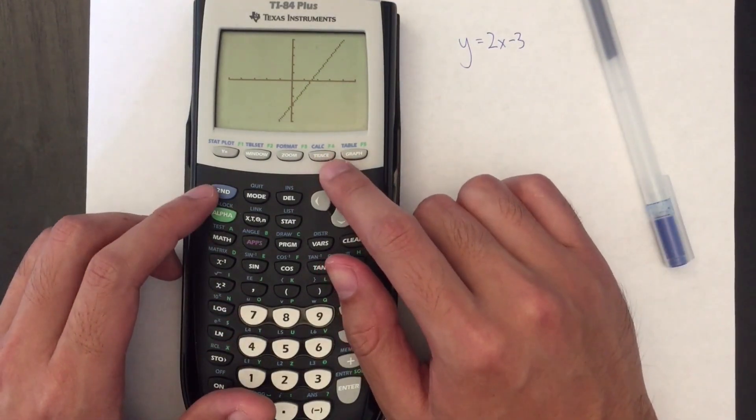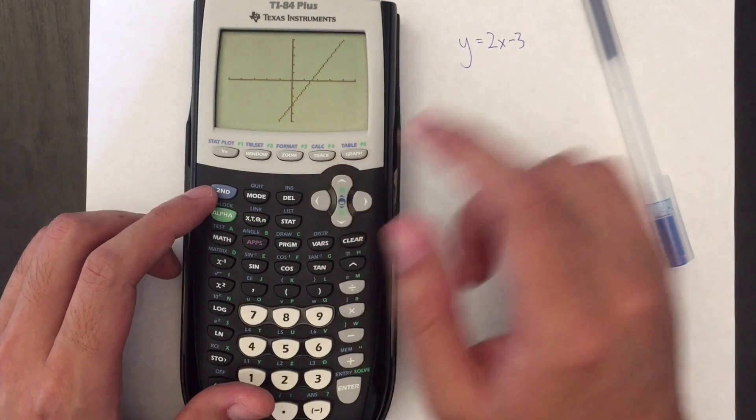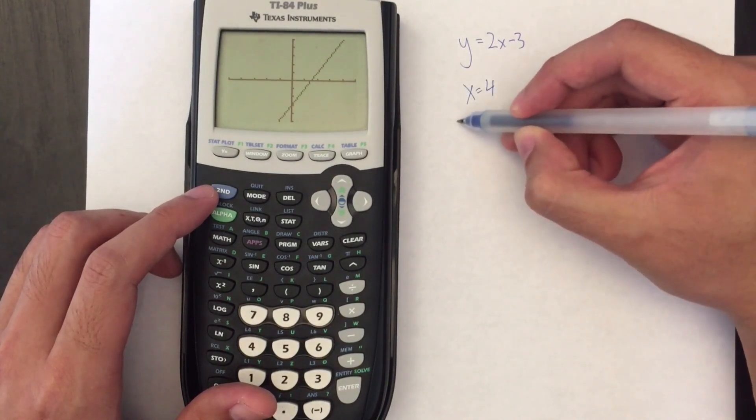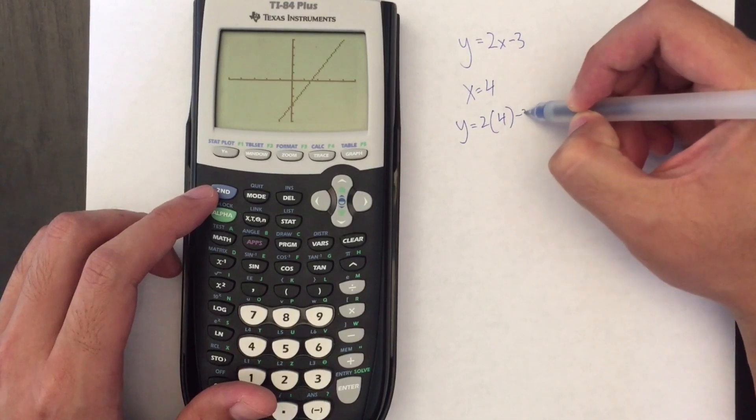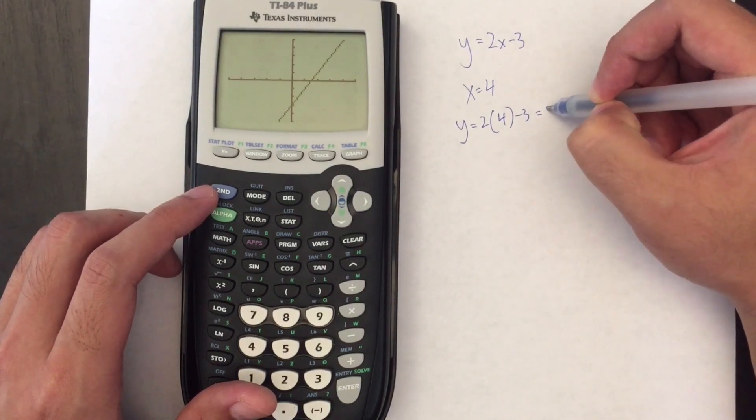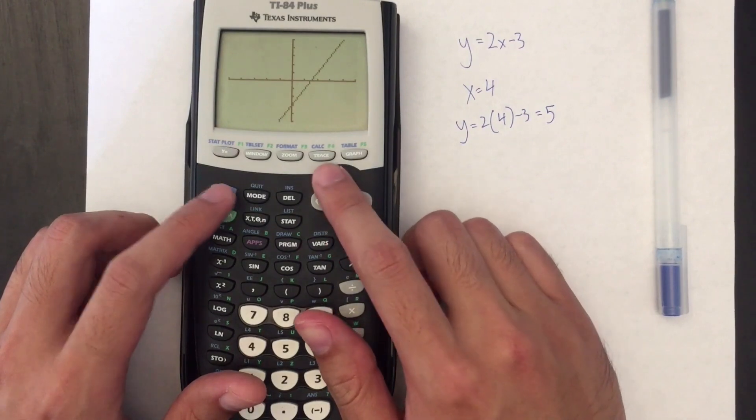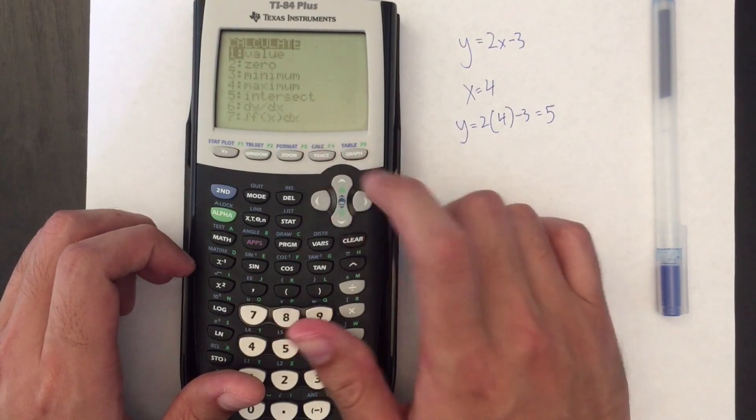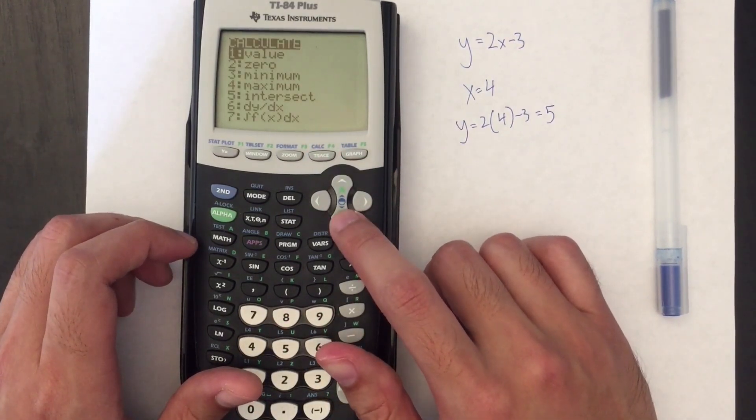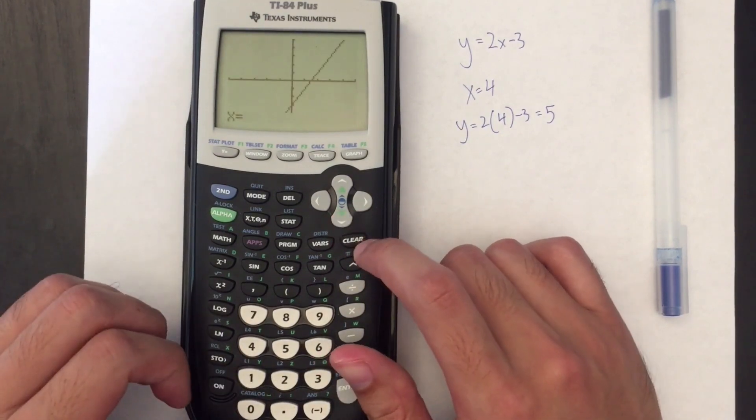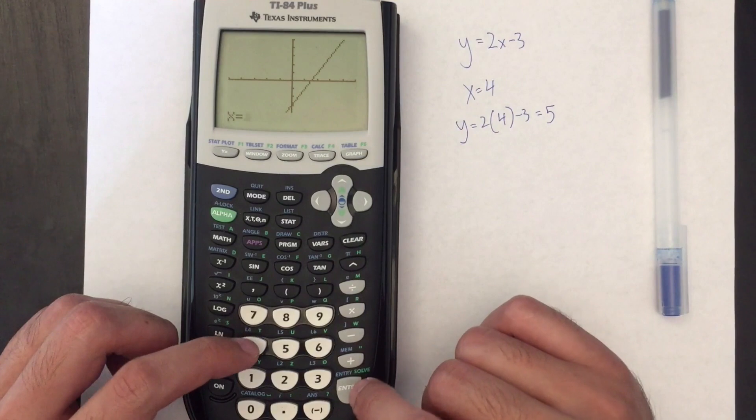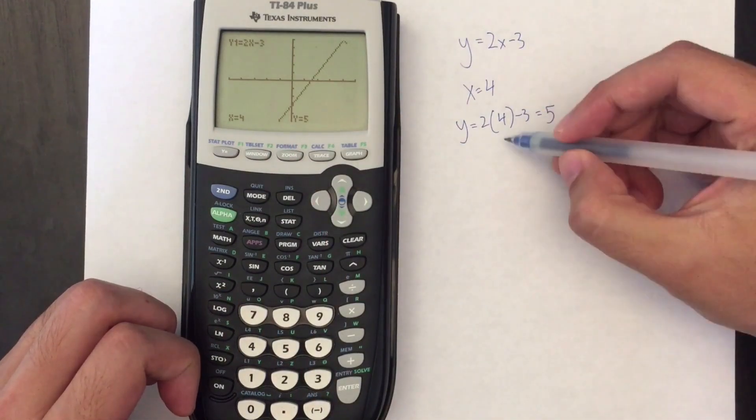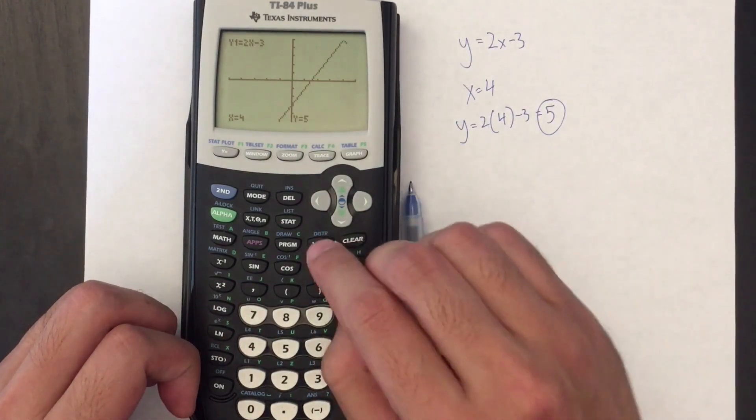So the next thing that I want to show you is how to calculate a certain value. So over here we'll just do it by hand first. When x equals 4, well y equals 2 times 4 minus 3 which is equal to 5. One way I can do that on the calculator is by going to second and then this trace button to access the calc menu and I want to calculate a value. So hitting 1 it brings up x equals, I'll type in 4 and this brings me to x equals 4, y equals 5. So indeed we got 5 from the graph.